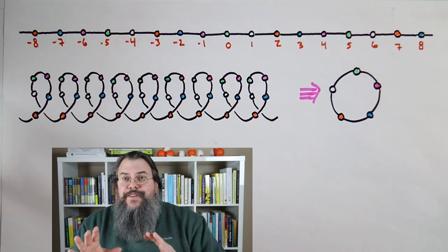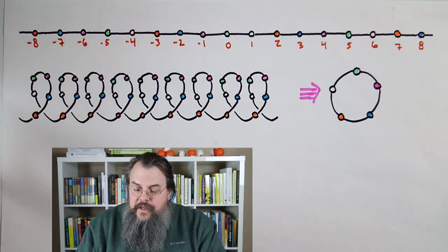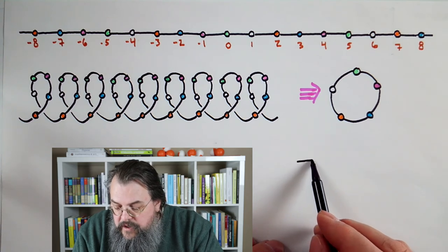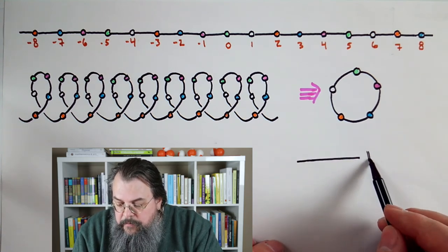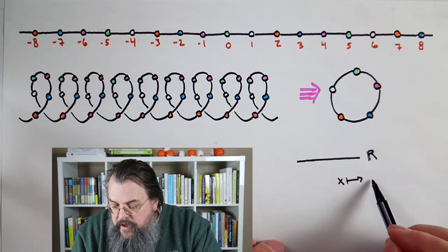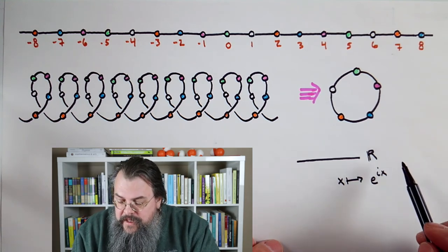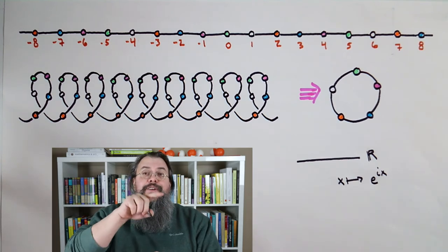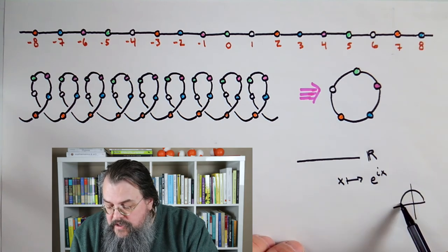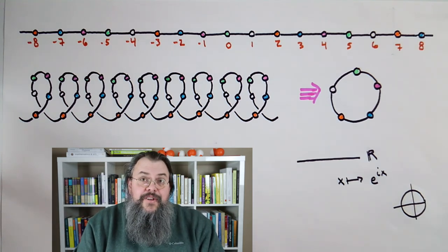On a side note, you can do this also with the real number line. Here, what we're doing is very discrete. For the continuous thing, if you start with just the line R, you can map a point x to what we call e to the i times x. It turns out this takes you to a point on the unit circle in the complex plane — you map onto a circle. So this behavior of mapping onto circles can be done both continuously and discretely.